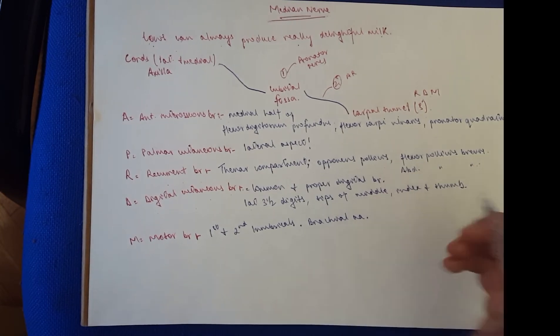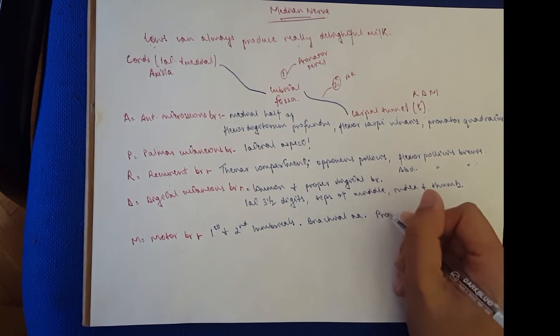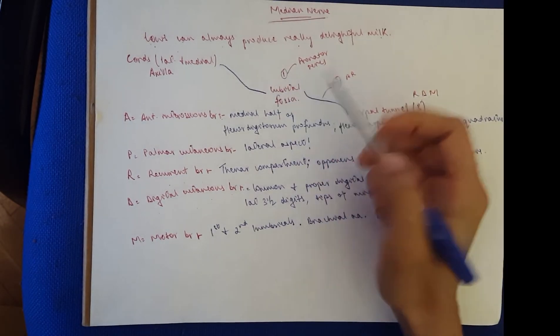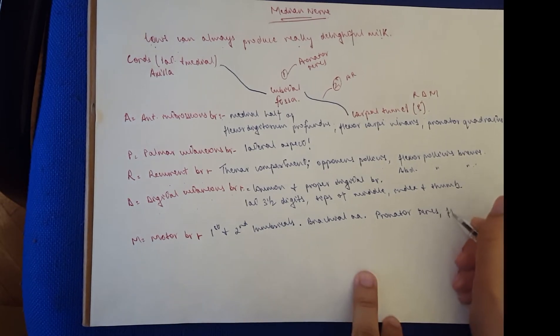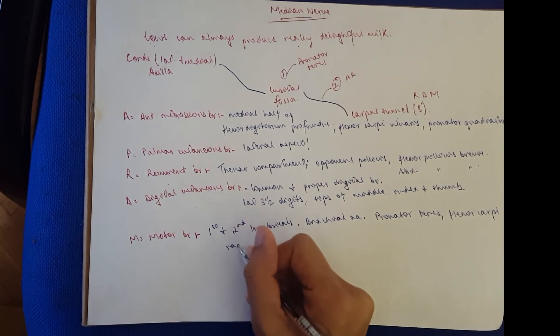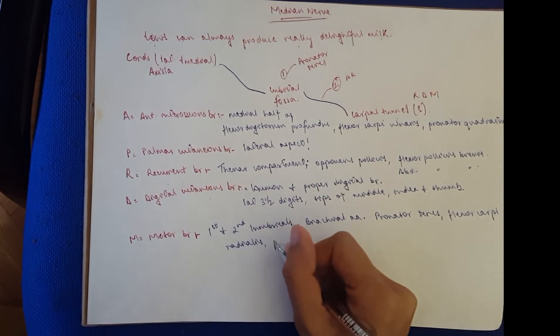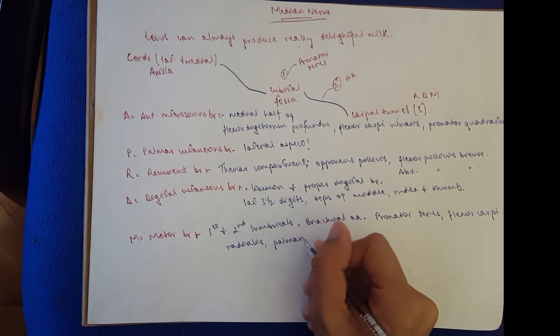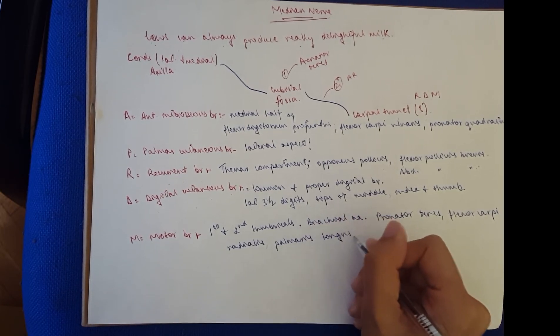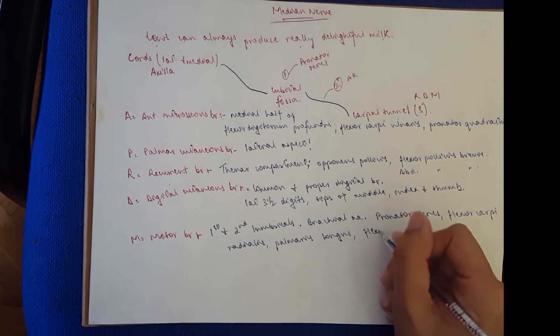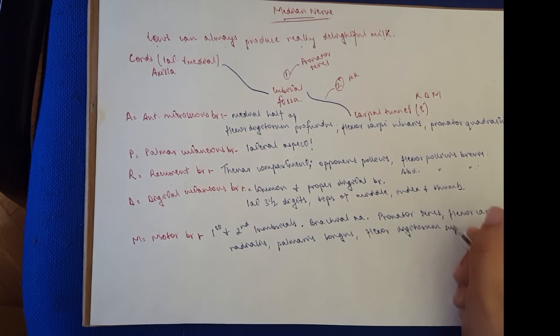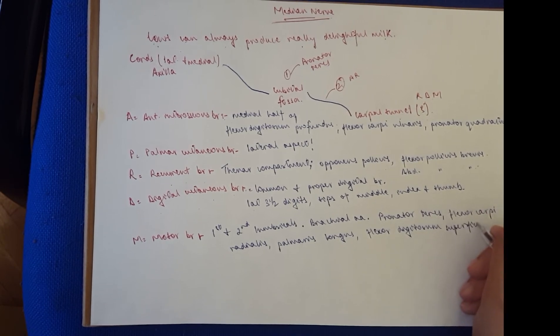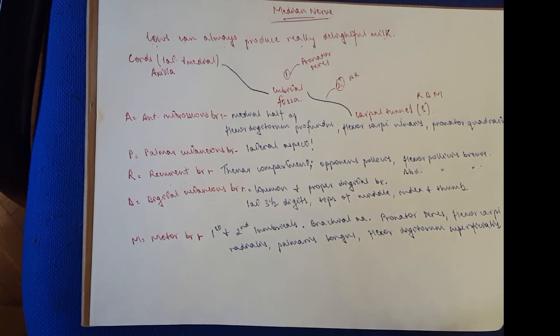They carry sympathetic fibers as well. The superficial group of muscles would be the pronator teres, which we already said it gives off over here. Then you have the flexor carpi radialis, the palmaris longus, and the flexor digitorum superficialis.